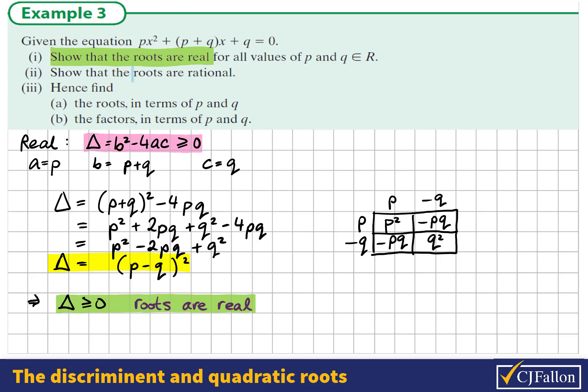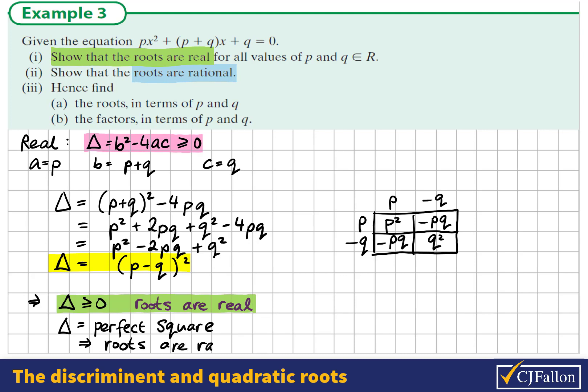In the next part, we're asked to show that the roots are rational. This is a related question. If the roots are rational, it's because you can express the discriminant as a perfect square. So we've actually done that already here. So since the discriminant can be written as (p - q)², it is a perfect square. Therefore, the roots are rational.